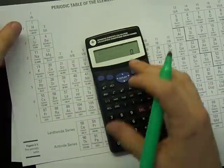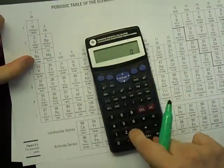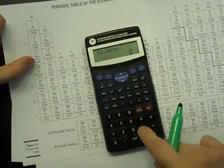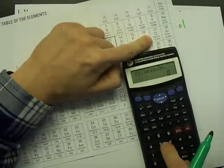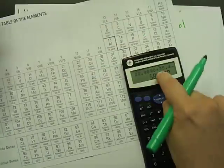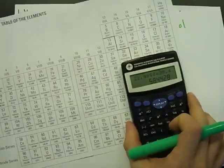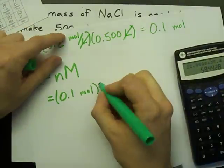According to my periodic table, the molar mass is 22.9898 plus 35.453. That's 58.44 grams per mole.